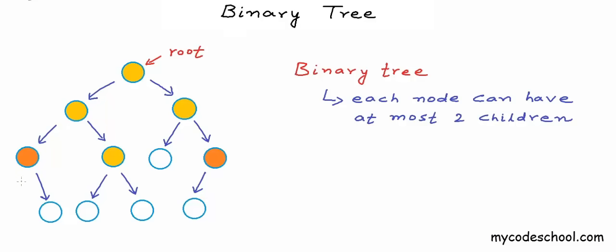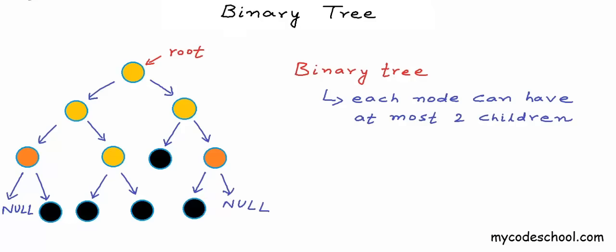In a program, we would set the reference or pointer to the left child as null. For a node that has only a right child, left child is null, and similarly for a node with only a left child, right child is null. For all leaf nodes — nodes with zero children — both left and right child are null.